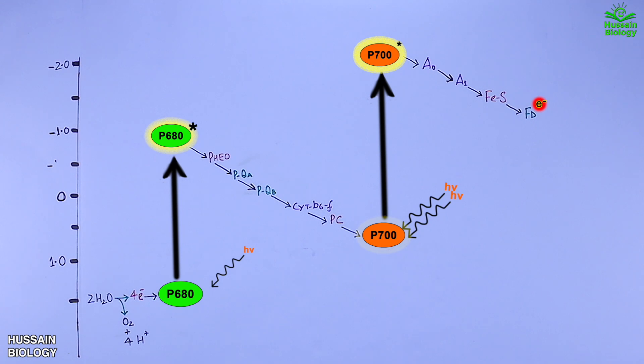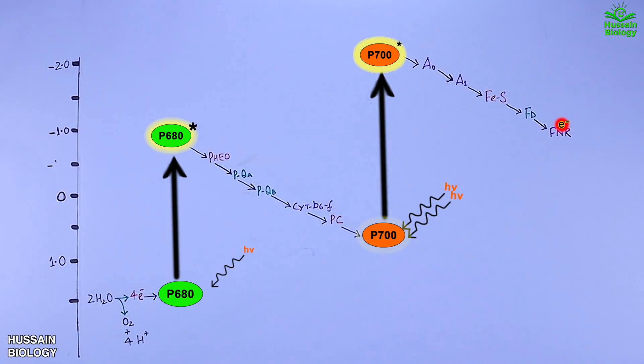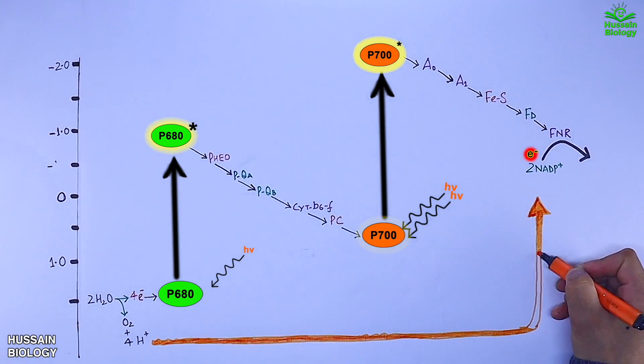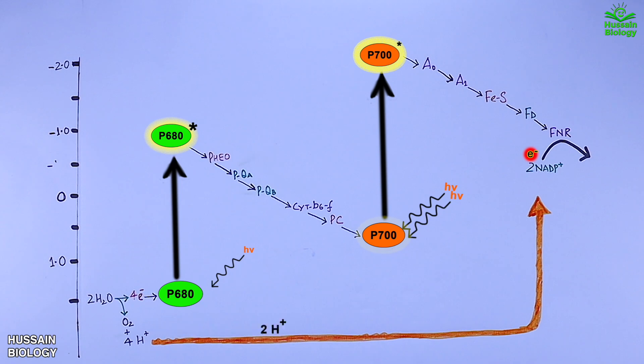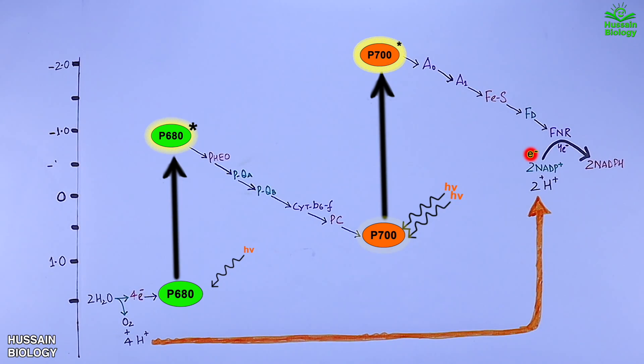Then we have the FNR enzyme which grabs electrons from ferredoxin and transfers them to NADP+. And in the meanwhile, the protons released on the oxidation of water are hereby used for the reduction of NADP+, thereby reducing NADP+ to NADPH as shown in the diagram. So this is our non-cyclic electron flow through Z-scheme.